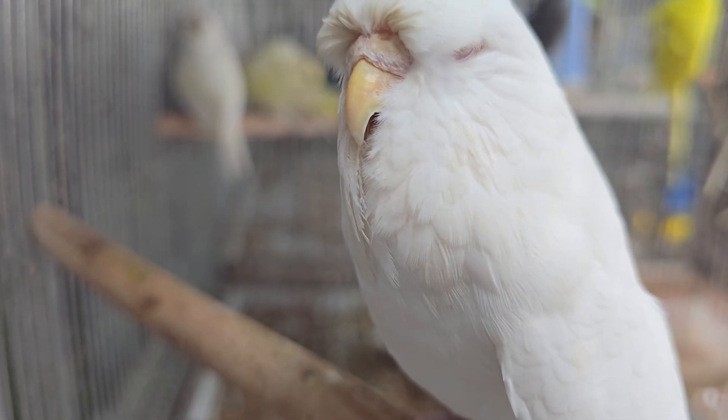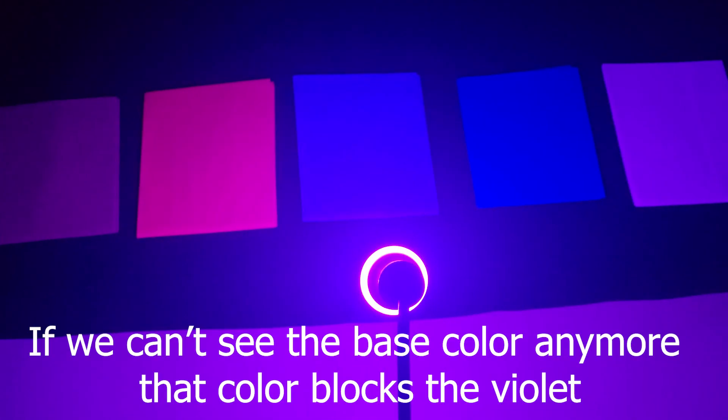So, by shining purple light on these fabrics, we can see exactly how different base colors respond. And that's the same principle behind how the violet factor shows or hides in budgie plumage.